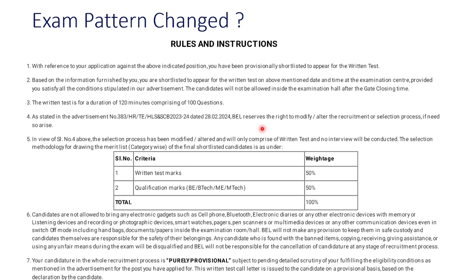As you have seen in your admit card rules and instructions, this time they have changed the pattern. This time they are not going to take an interview. The new pattern is: written test marks are considered 50%, and your qualification marks in BTEC or AMTEC are considered 50%. Previously, whatever exam happened for HLS or other SBUs, when BL took exams for trainee engineer or project engineer, they would ask 85 marks in written test and 15 marks for interview. But this time for HLS, they are asking 100 questions in the written test.